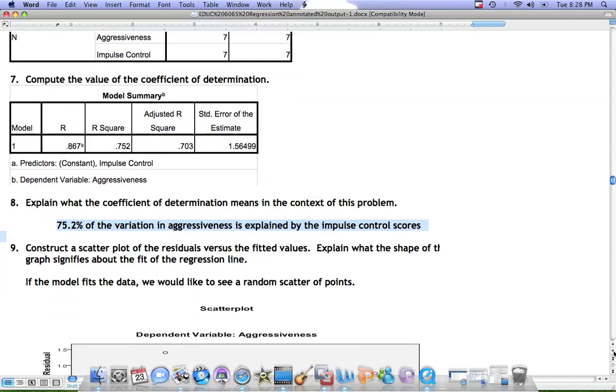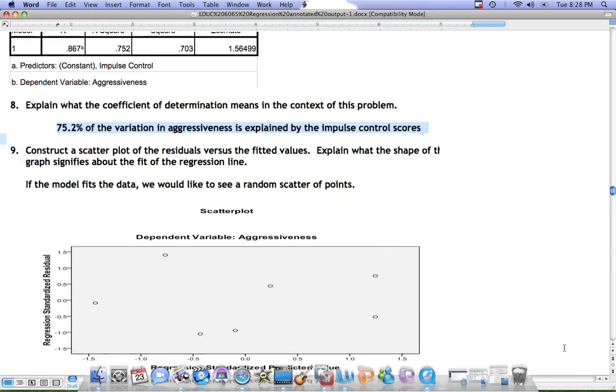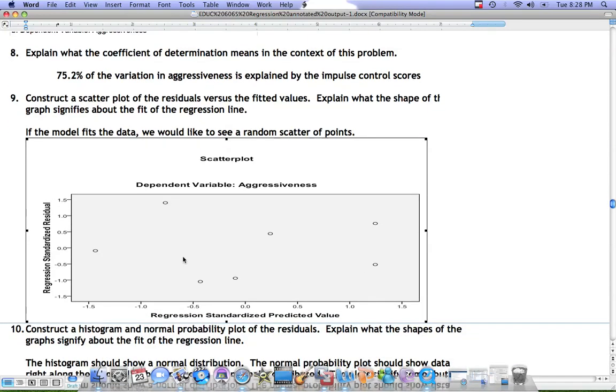In order to assess the fit of the model, there are three additional pieces of information that we should look at. First, we should look at a scatter plot of the residuals versus the fitted values. When we look at this plot, what we should see is a random scatter of points.